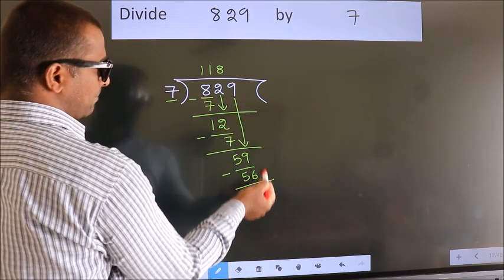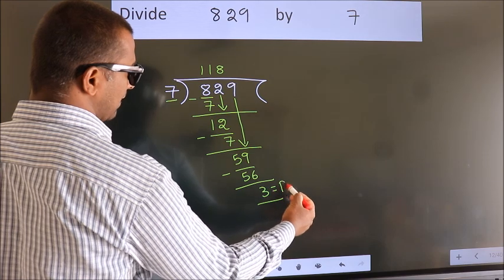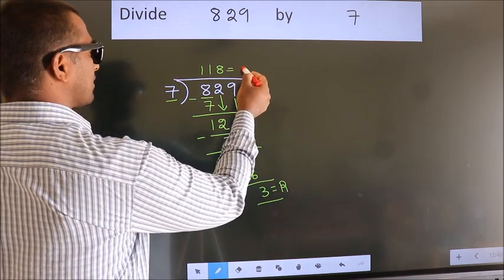No more numbers to bring down. So we stop here. This is our remainder. This is our quotient.